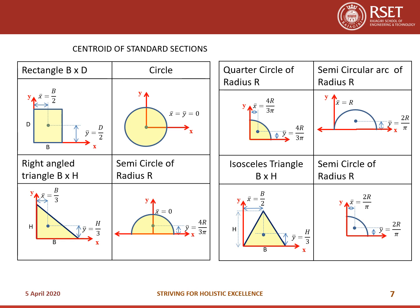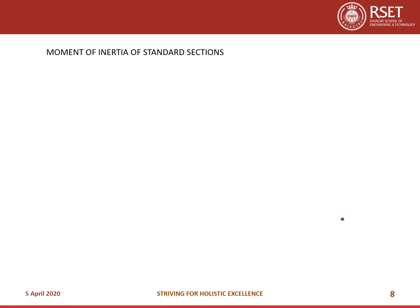These are the standard centroid values for standard sections we saw in the previous lecture — rectangle, circle, semicircle, right angle triangle, quarter circle, isosceles triangle, semicircular arc, and quarter circular arc. Similarly, the centroidal Moment of Inertia for these standard sections must be remembered, because if you know the Moment of Inertia about the centroidal axis you can always use the Parallel Axis Theorem or Perpendicular Axis Theorem to get the Moment of Inertia about any other axis.